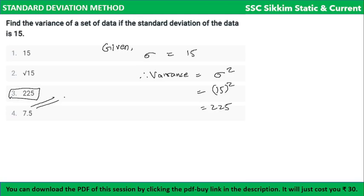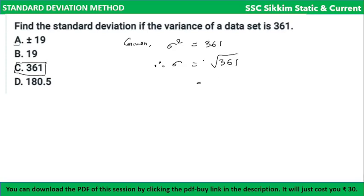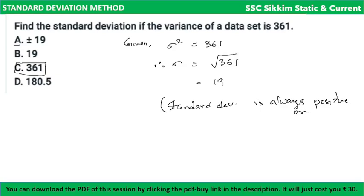Another question: find the standard deviation if the variance is 361. Given: sigma² = 361. Therefore sigma = square root of 361. When we take the square root, we get plus or minus — but standard deviation is always positive. So the answer is +19. Standard deviation is always positive or zero.